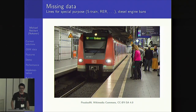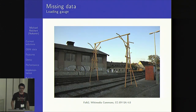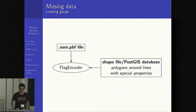It is also not possible to avoid urban tunnels with diesel engines — for example, the tunnel of the Munich S-Bahn. I assume you are not allowed to use this tunnel with a diesel engine, but we cannot map this in OpenStreetMap because there are no signs at the beginning and end of the tunnel. Loading gauge data could be mapped in OpenStreetMap, but it's not mapped very often and is sometimes difficult to measure. A solution would be to match OpenStreetMap with a different dataset and in the flag encoder check if ways intersect with polygons of prohibited railway tracks.